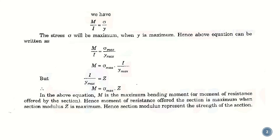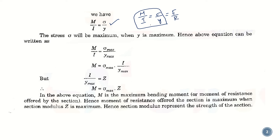We know that M/I = σ/y, which comes from the bending equation: M/I = σ/y = E/R. Taking the first two terms of this relationship, we can write M/I = σ_max / y_max.